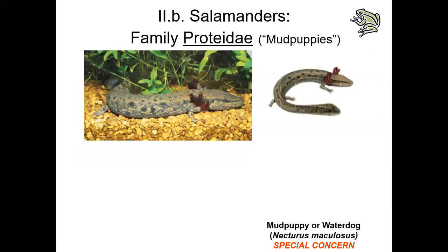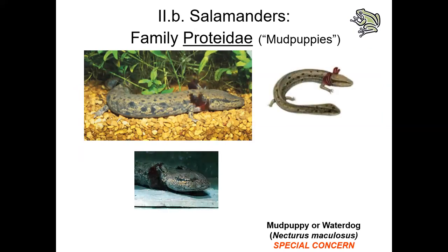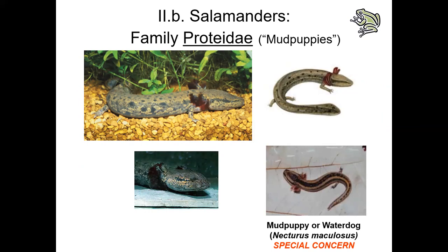Moving on to family Proteidae — these are also known as our mud puppies. Sometimes they're confused with sirens, but remember sirens only have front limbs and completely lack hind limbs. Oftentimes people also confuse this with the hellbender, but hellbenders have really fleshy folds of skin on the sides of their body that are highly innervated and vascularized — that's where hellbenders get most of their oxygen. Mud puppies have no fleshy folds or wrinkly skin, and they have external gills, which hellbenders don't have.